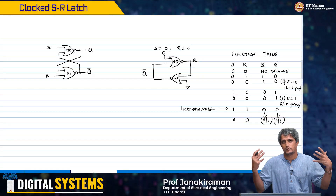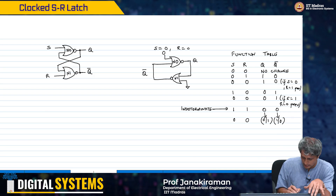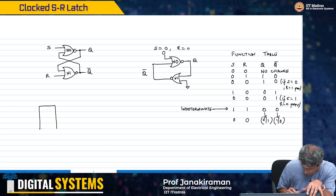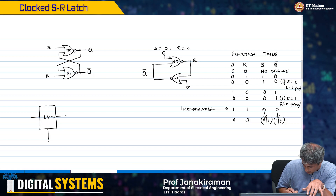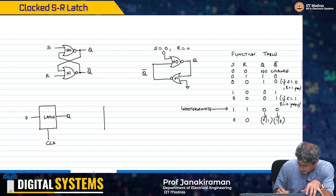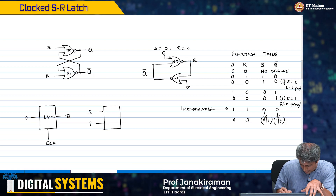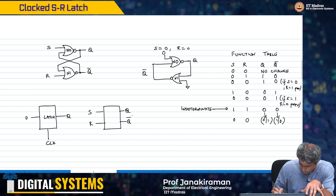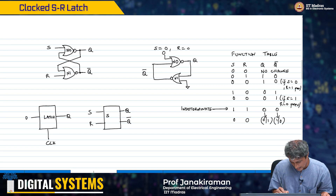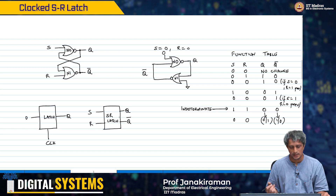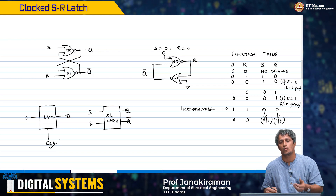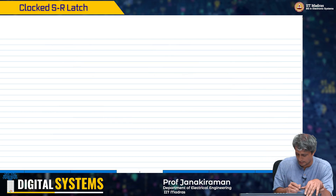Now, I want to look at the D latch that we had. So what we said was earlier, we had a latch with clock, D, and Q. Now if we look at our SR latch, we have two inputs set and reset, and we have two outputs Q and Q bar. This is my SR latch. Obviously, the input that is missing is the clock. So how do I incorporate the clock into this particular system?